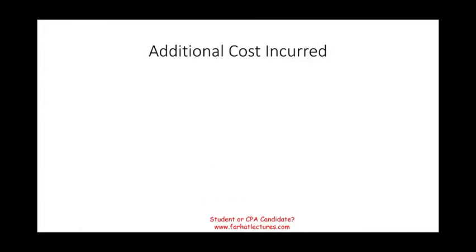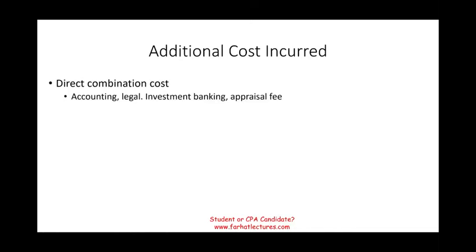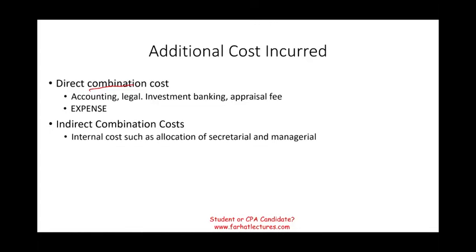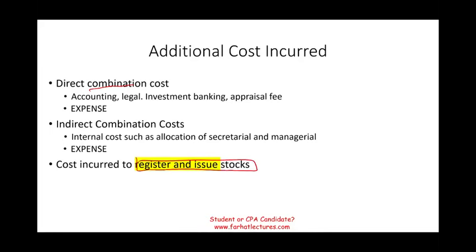You may incur additional costs when buying another company. These costs are considered either direct or indirect — such as accounting, legal, investment banking, and appraisal fees. What do you do with these costs? Expense them. You might also incur indirect combination costs such as internal managerial and secretarial costs incurred in the process. Those are also expensed. But not everything is expensed: costs incurred to register and issue stocks are a reduction in additional paid-in capital, not an expense. That question often comes up on the CPA exam.